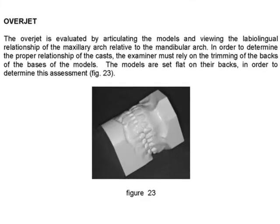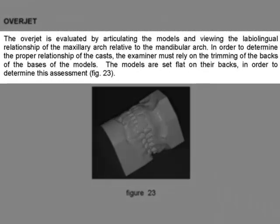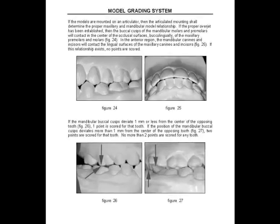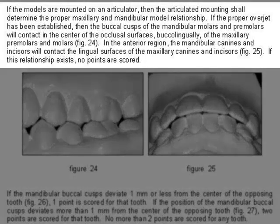Overjet is evaluated by articulating the models and viewing the labial-lingual relationship of the maxillary arch relative to the mandibular arch. To determine the proper relationship of the casts, the examiner must rely on the trimming of the backs of the bases of the models. The models are set flat on their backs for assessment. If the models are mounted on an articulator, the articulating mounting shall determine the proper maxillary-mandibular model relationship.